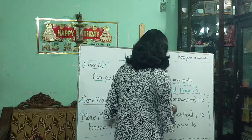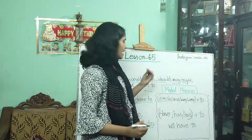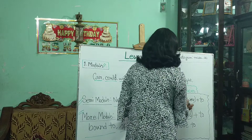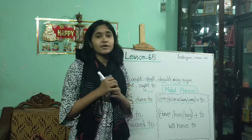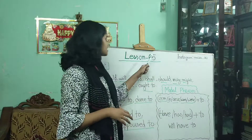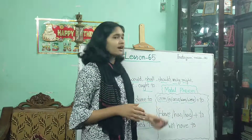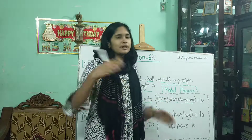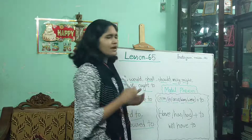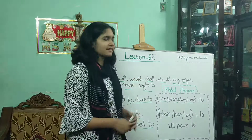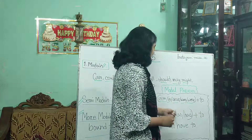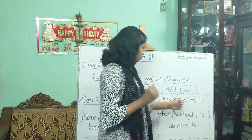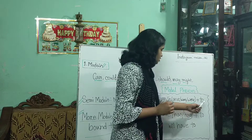In modal phrases we have the auxiliary 'to be' verb. From the auxiliary to be verb, they are: am, is, are, was, were. In our previous video about lesson number 64, we understood what they are used for and why we use them. So am, is, are, was, were — plus 'to' — that is a modal phrase: am to, is to, are to, was to, were to.